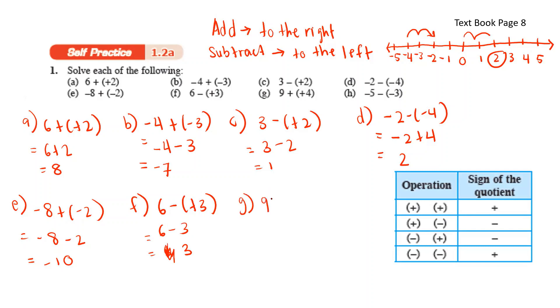9 plus positive 4 — positive and positive is positive. So 9 plus 4, you get 13.